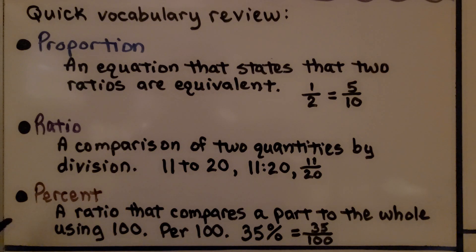Percent, that's a ratio that compares a part to the whole using 100. It means per 100, so 35% is equal to 35 hundredths.